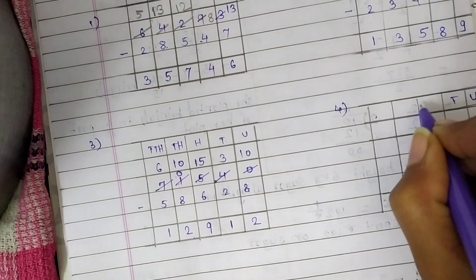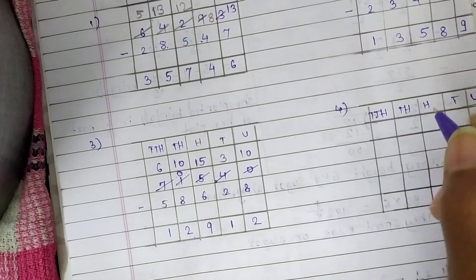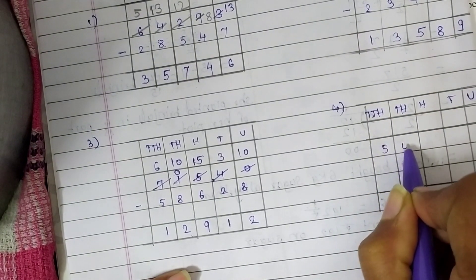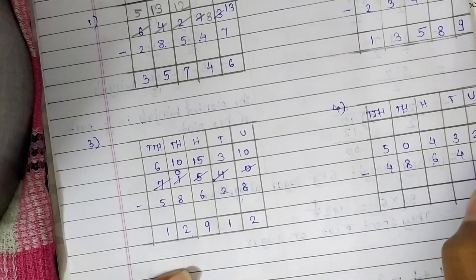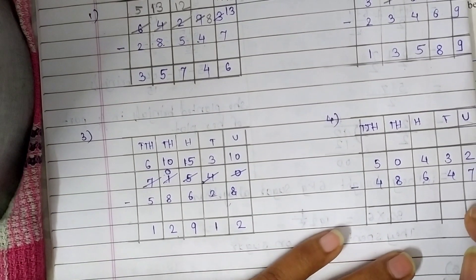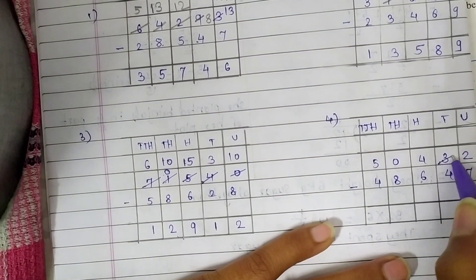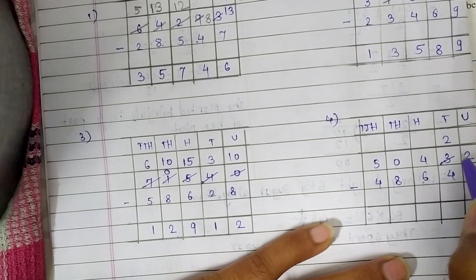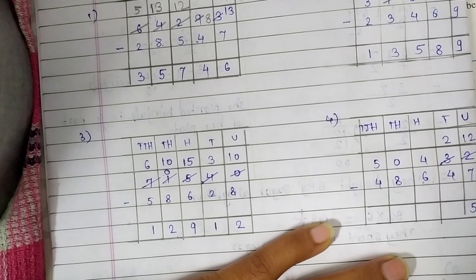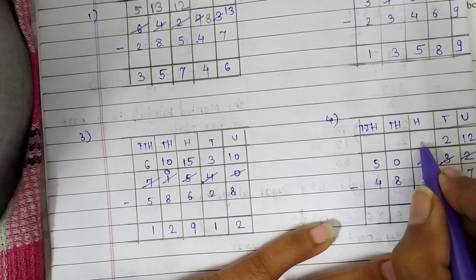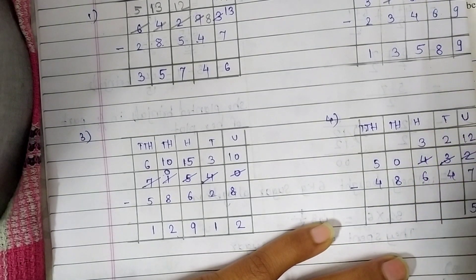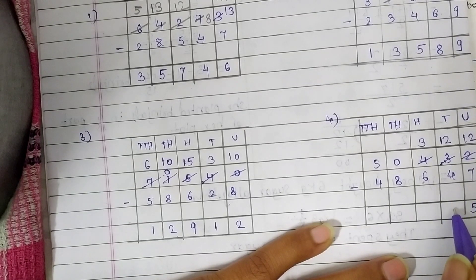Fourth question: write units, tens, hundreds, thousands, and ten-thousands. The fourth question is 50,432 minus 48,647. Here 2 is a smaller number, so we are getting 1 from 3 — it becomes 2 tens — and here it becomes 12 units. So 12 minus 7 is 5. We can't subtract 4 from 2, so we are going to take 100 from 4 — it becomes 3 — and here the number becomes 12 tens. So 12 minus 4 is 8.